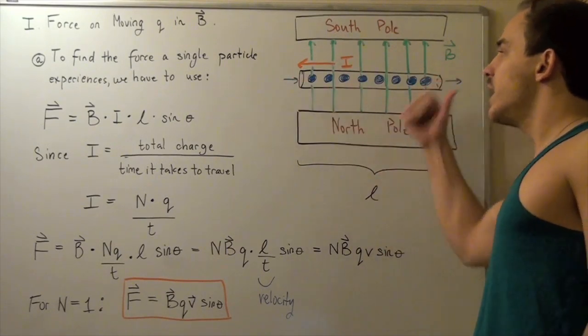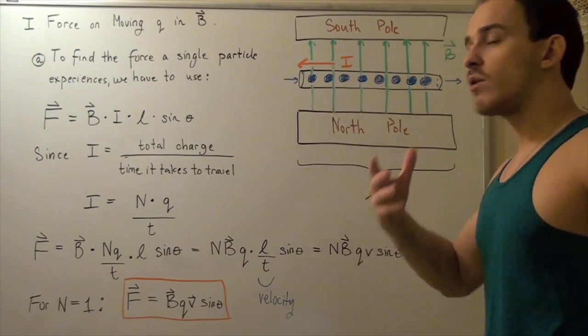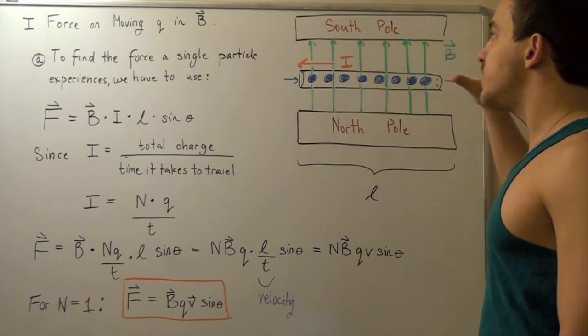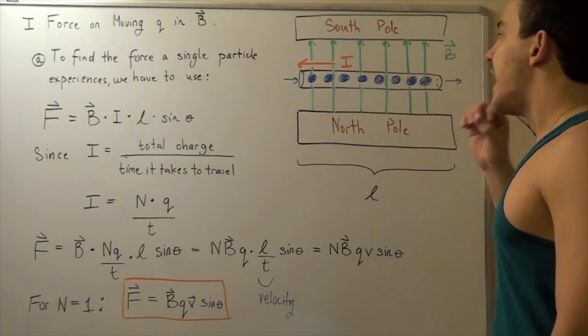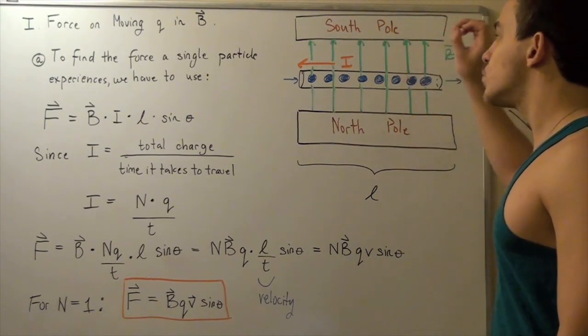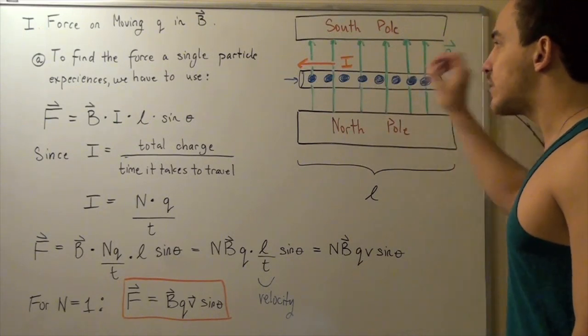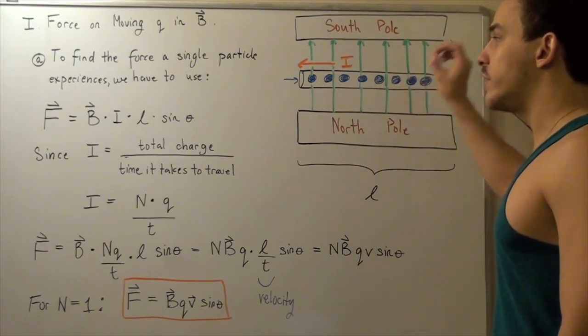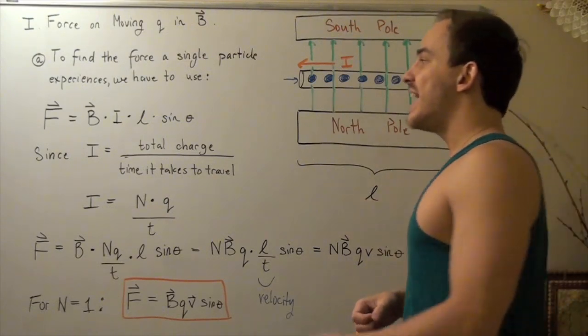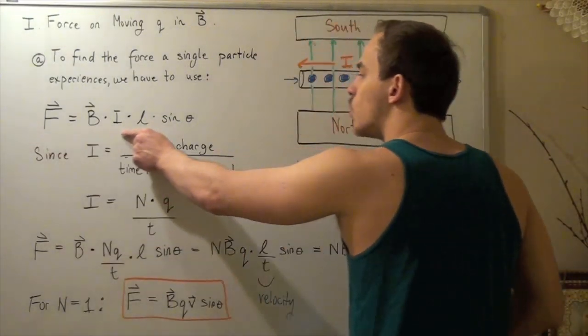Electrons are moving this way, and that means by convention, our current should be moving in the opposite direction. What we said in an earlier lecture is that this magnet will exert a force on this wire because the wire has moving electrons. It has a current flowing through it, and the force that it exerts, the magnitude of our force, is given by this equation.